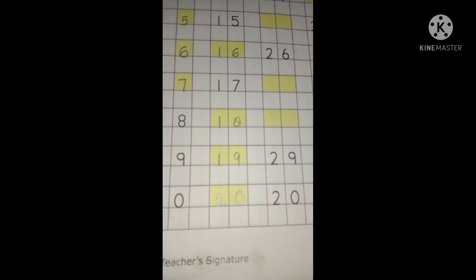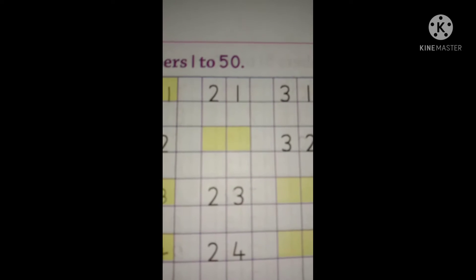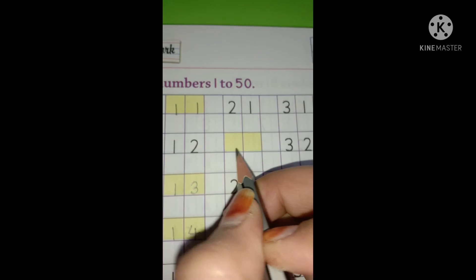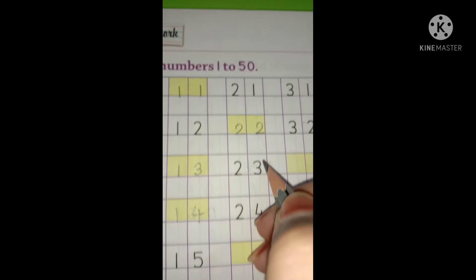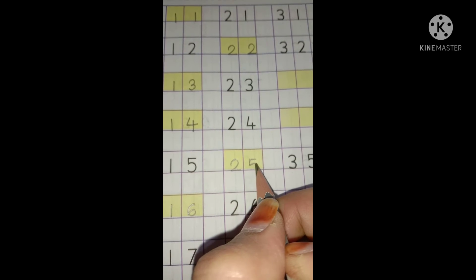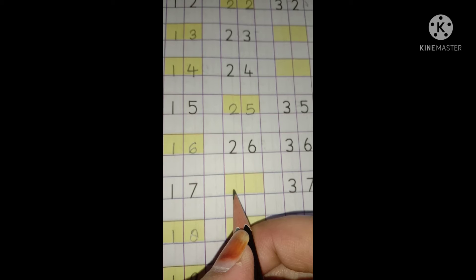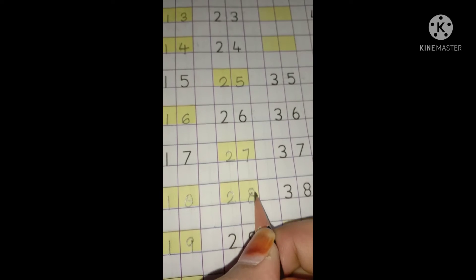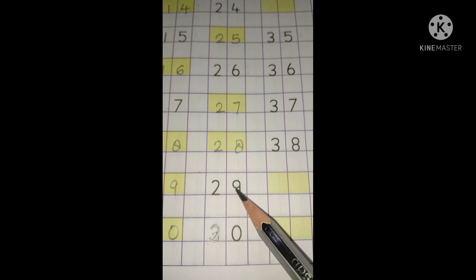Then what comes after 20? It's number 21. Then what comes after 21? It's number 22, 23, 24, 25, 26. Then what comes after 26? 27, then 28, 29, and then 30.